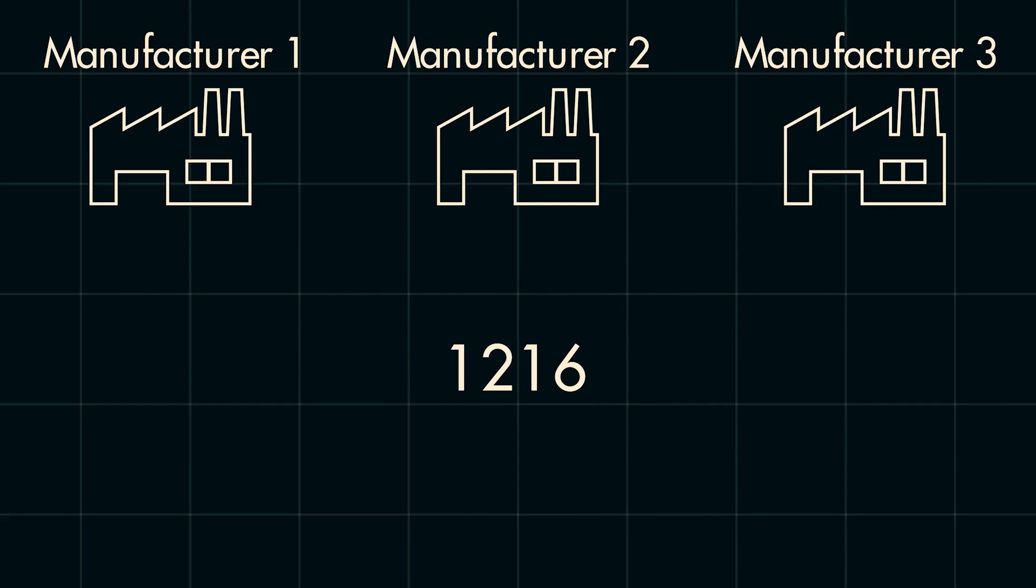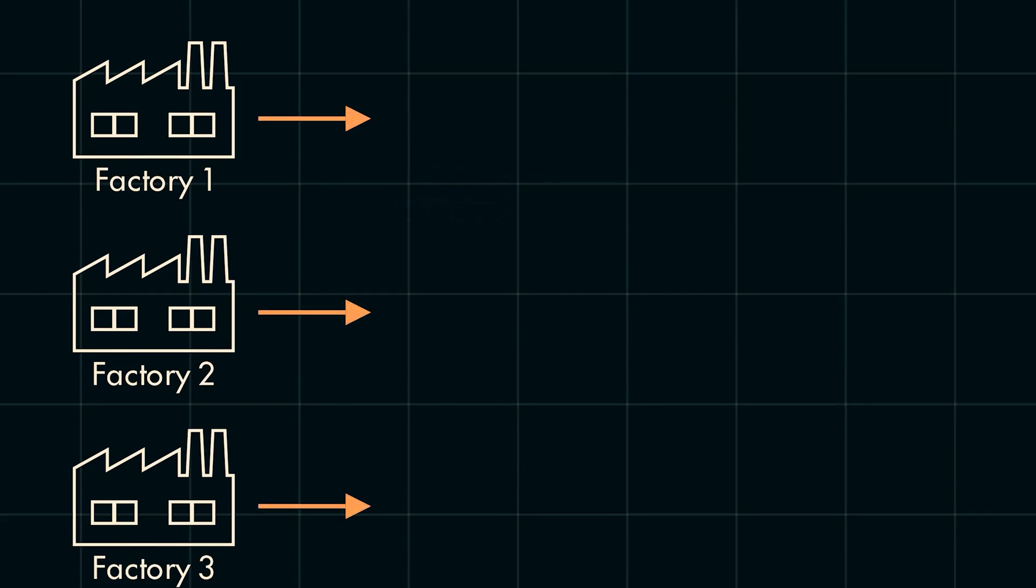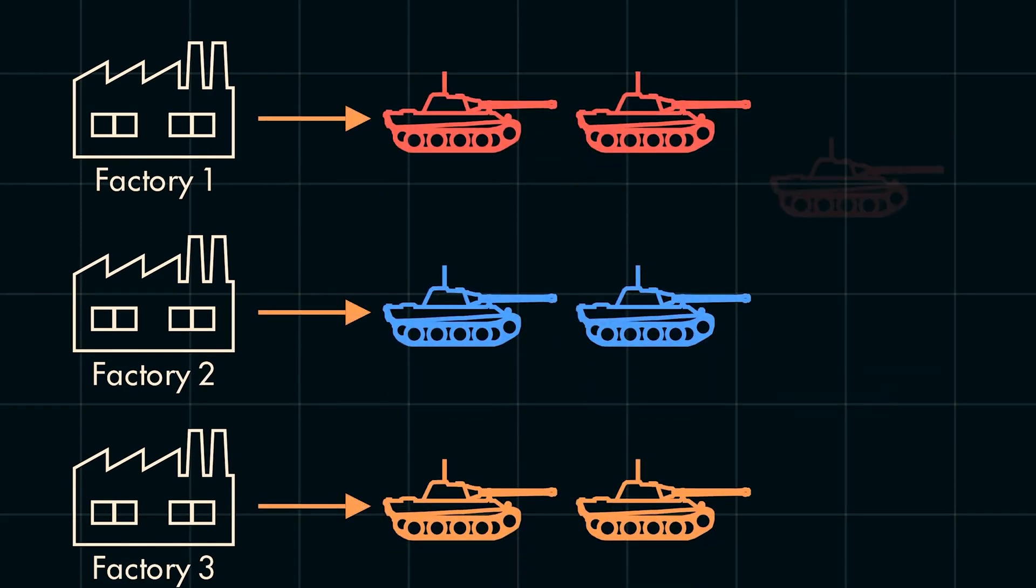Recall that each Panther had 32 of these tires, so dividing 1,216 total tires by 32 tires per tank means that we'd estimate that 38 tanks were being produced per month from a specific plant. This analysis could be combined for all the plants to get total estimate for the production of Panthers.